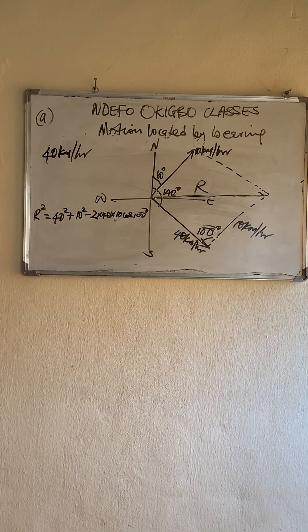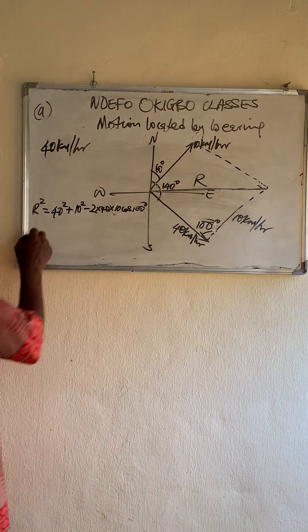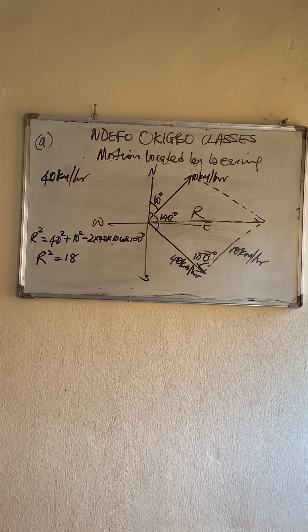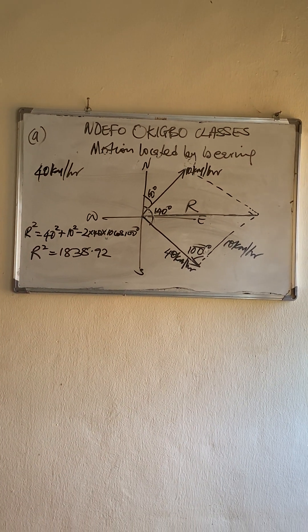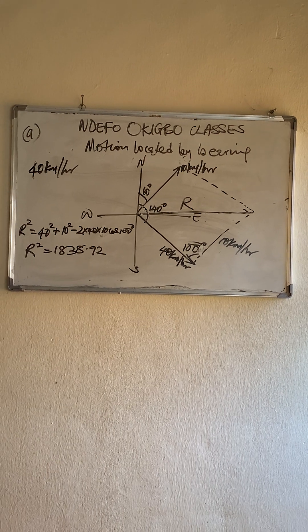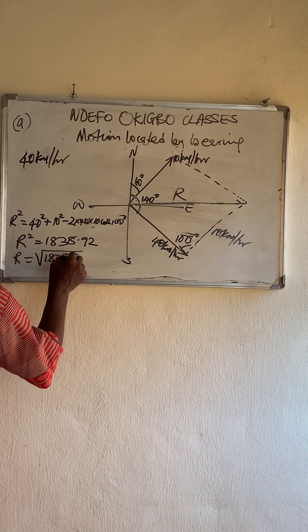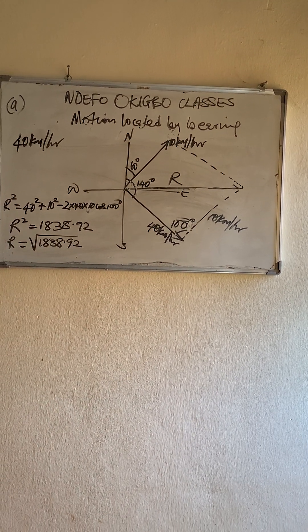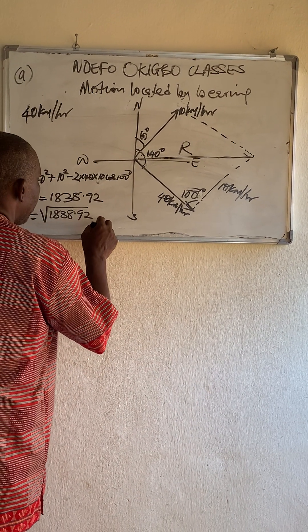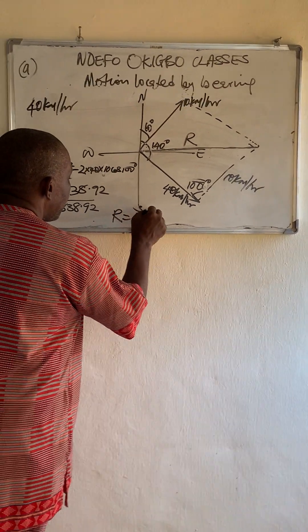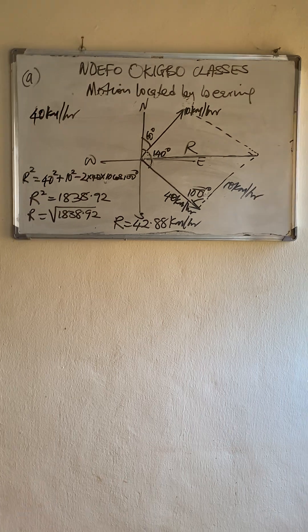So if we work on this, we have that R squared is equal to 1838.92. That means R is equal to 42.88 kilometers per hour. Simple solution.